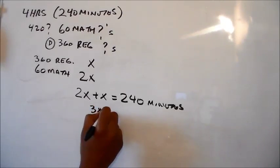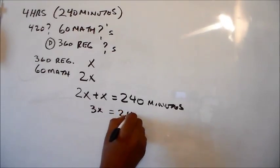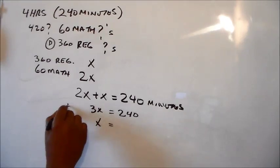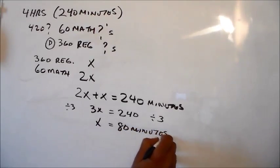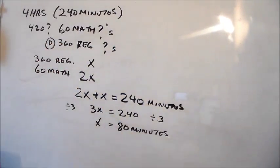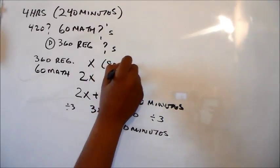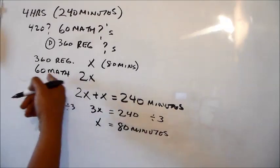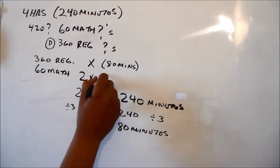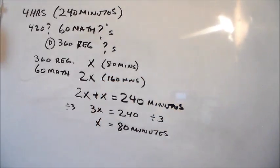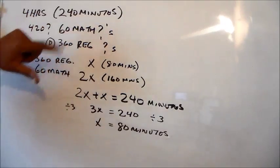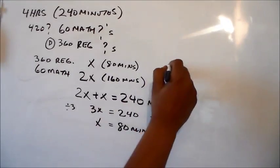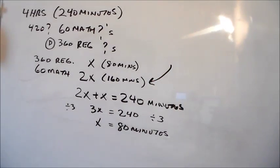So 3X, which is 2X and X combined, is going to be equal to 240 minutes. X is going to be, if we divide both sides by 3, X is going to be equal to 80 minutes. 80 minutes is going to be the amount of time dedicated to the regular question. So we come back up here. And we will put 80 minutes here. And if twice the amount of time is allotted for math questions, then 160 minutes is what's going to be allotted for math. And 160 plus 80 is going to equal 240 minutes. So 160 is the answer. Because the question is asking how much time is going to be allotted for math questions. 160 minutes.